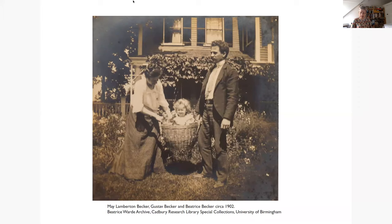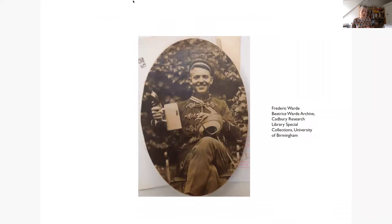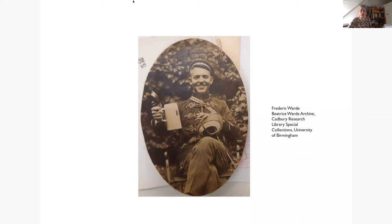In 1922 the then Beatrice Becker married Frederick Ward, who became a very eminent figure in the world of printing. Unfortunately the Wards' marriage didn't last, but Beatrice retained a very fond spot for Frederick — she kept his photograph in a special frame. Ward's career had begun as an assistant librarian at the American Type Founders library before she moved to Britain in 1925, where she ultimately became the publicity manager for the Monotype Corporation in 1929. For over 30 years she edited the Monotype Recorder and the Monotype Newsletter. Monotype made printing and composing equipment, designed and sold typefaces, and were one of the most important organizations in that area of work in Britain at the time.